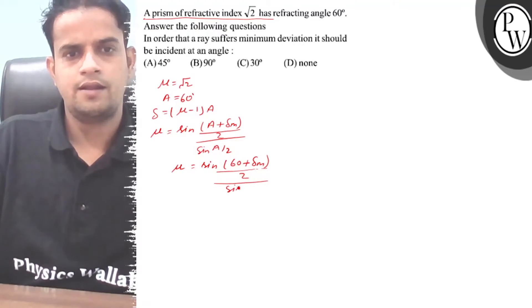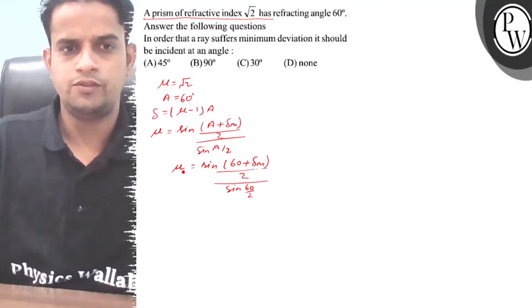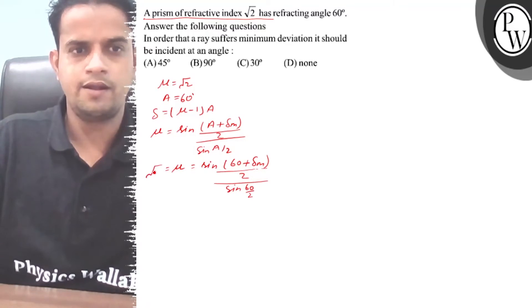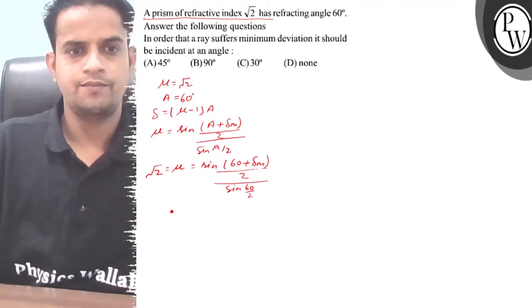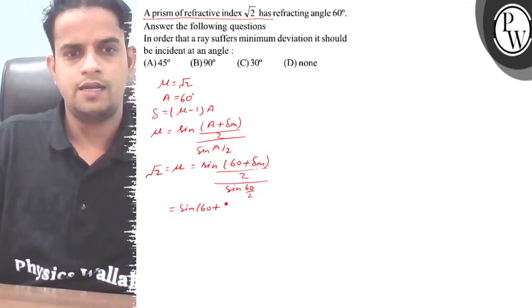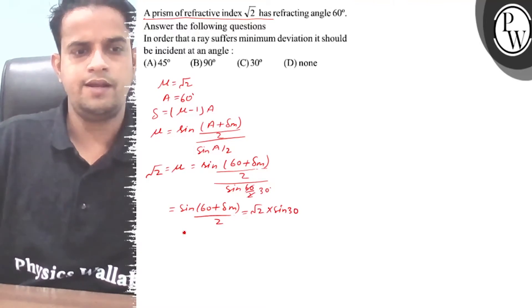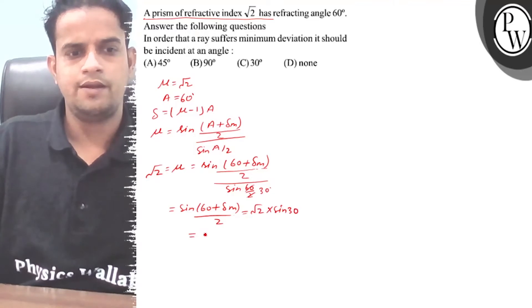The μ that is given is root 2. So sin (60 plus δm) divided by 2 equals root 2 times sin 30.